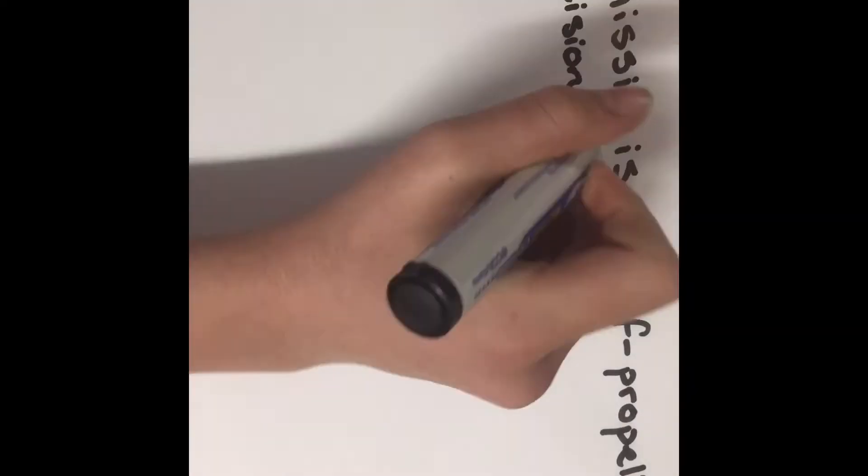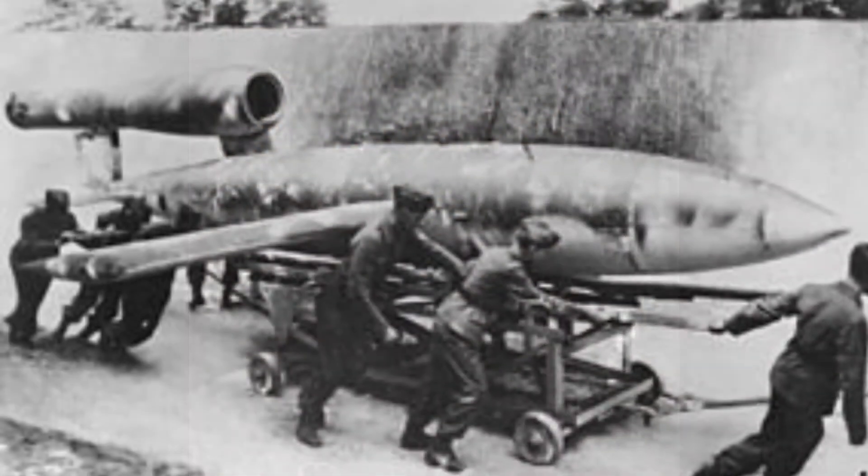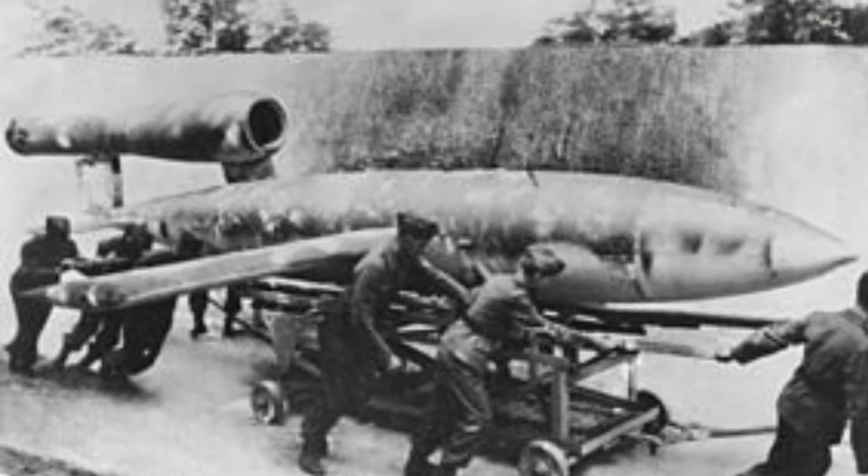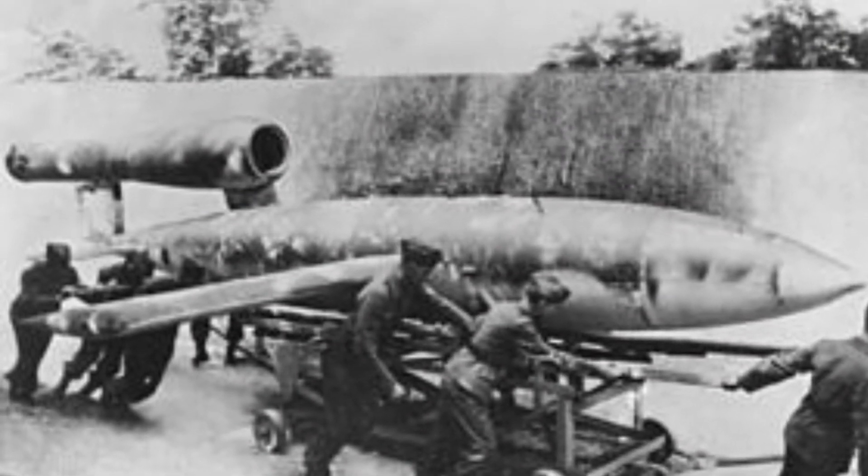By definition, a missile is a self-propelled precision-guided munition system. The first missiles were developed by Nazi Germany in World War II. As they had experimental jet engines and little wings, they weren't very fast and were also very inaccurate.